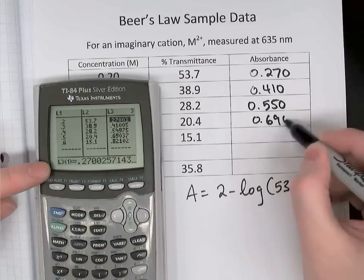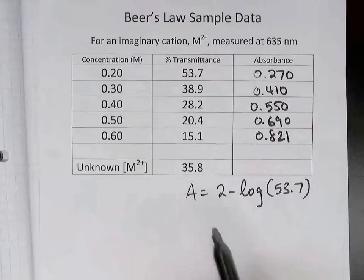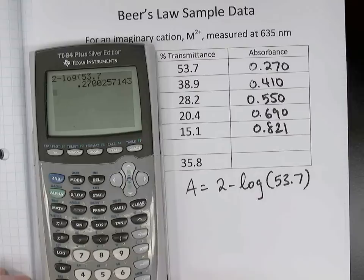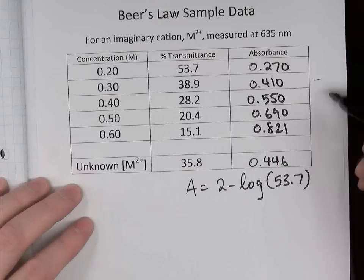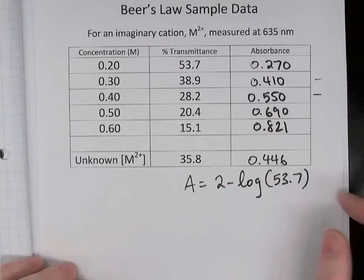I also measured an unknown solution — one whose concentration I didn't know. Taking its transmittance value from the colorimeter and converting it: 2 minus the log of 35.8 gives an absorbance of 0.446. Notice that this absorbance of 0.446 falls between the third and fourth values, so I'm predicting the concentration of the unknown is between 0.3 and 0.4 molarity. But let's get that value more directly.